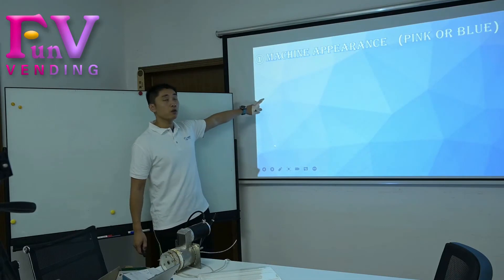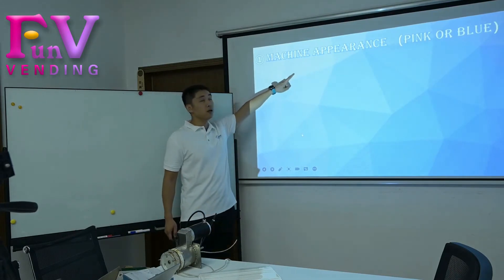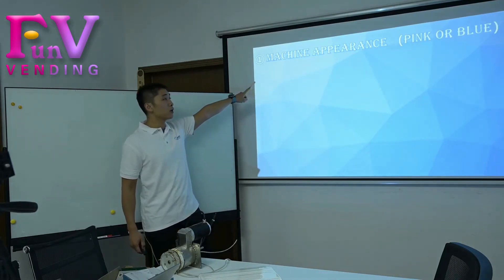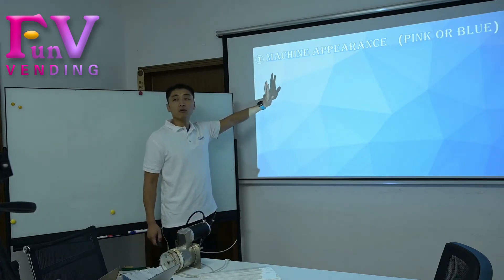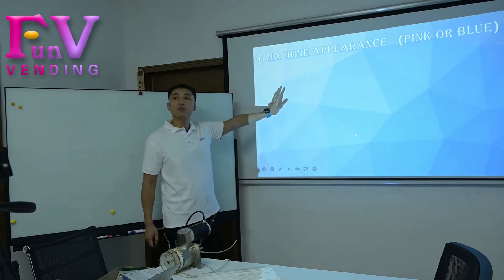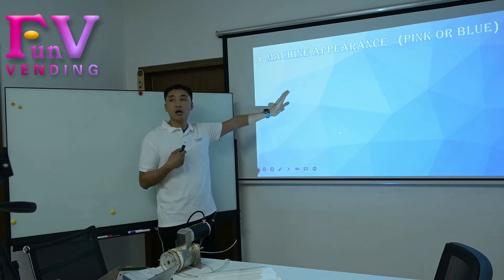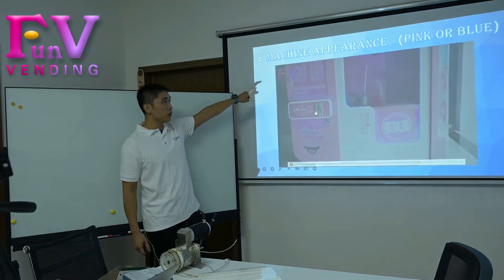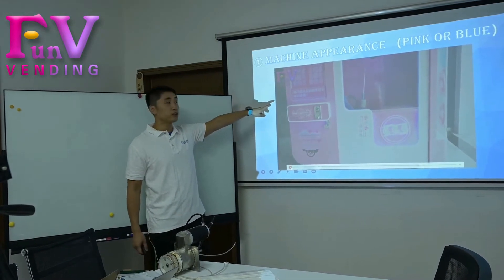Firstly, we are going to check the appearance of this candy cotton machine, because as one of the machines, the outlooking is very important for the customer. So we can see about this video firstly.